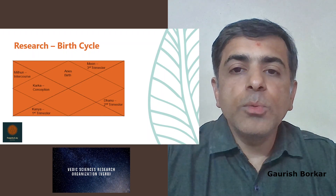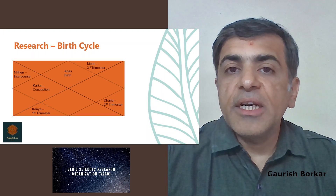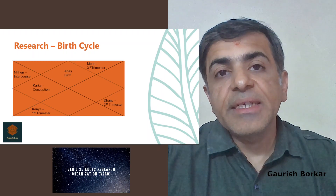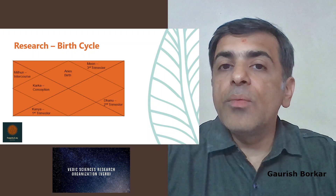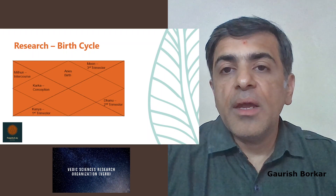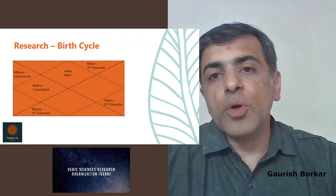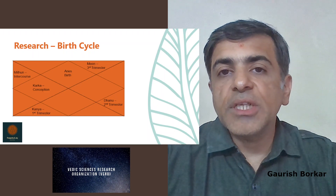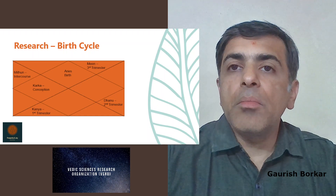For example, Virgo or Kanya is where the first trimester ends. Dhanu or Sagittarius is when the second trimester ends. And naturally, after the main sign, the baby would take birth. This is how the symbols of the signs are designed, and this cycle is very important if we want to understand the fundamentals of Jyotish.